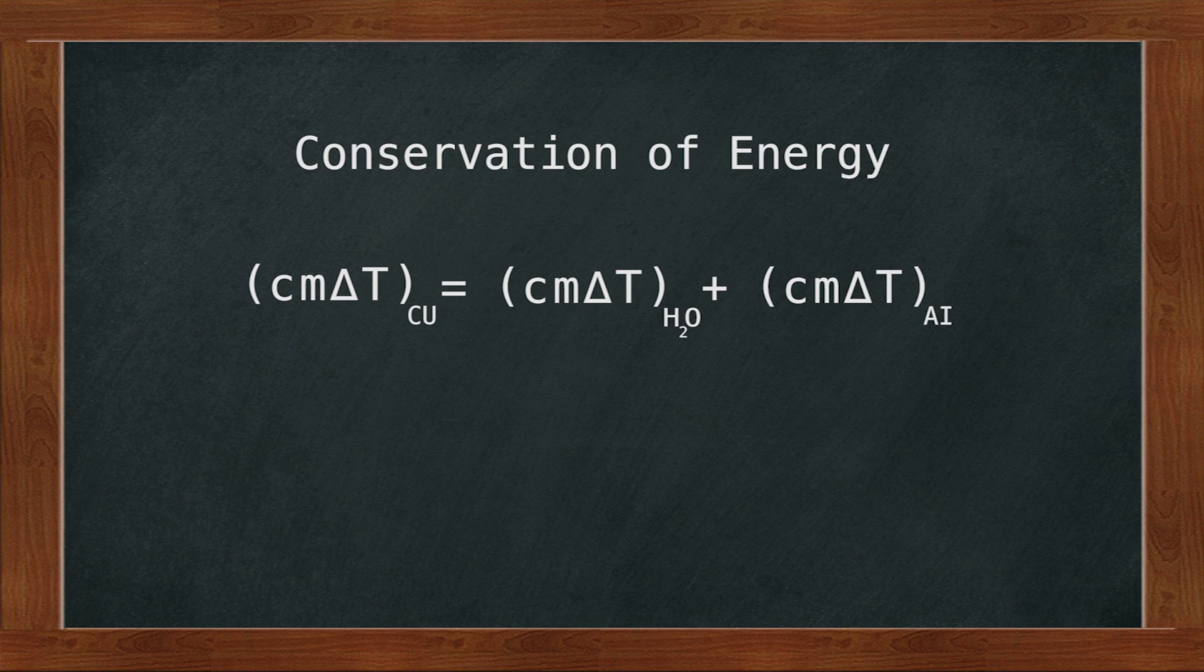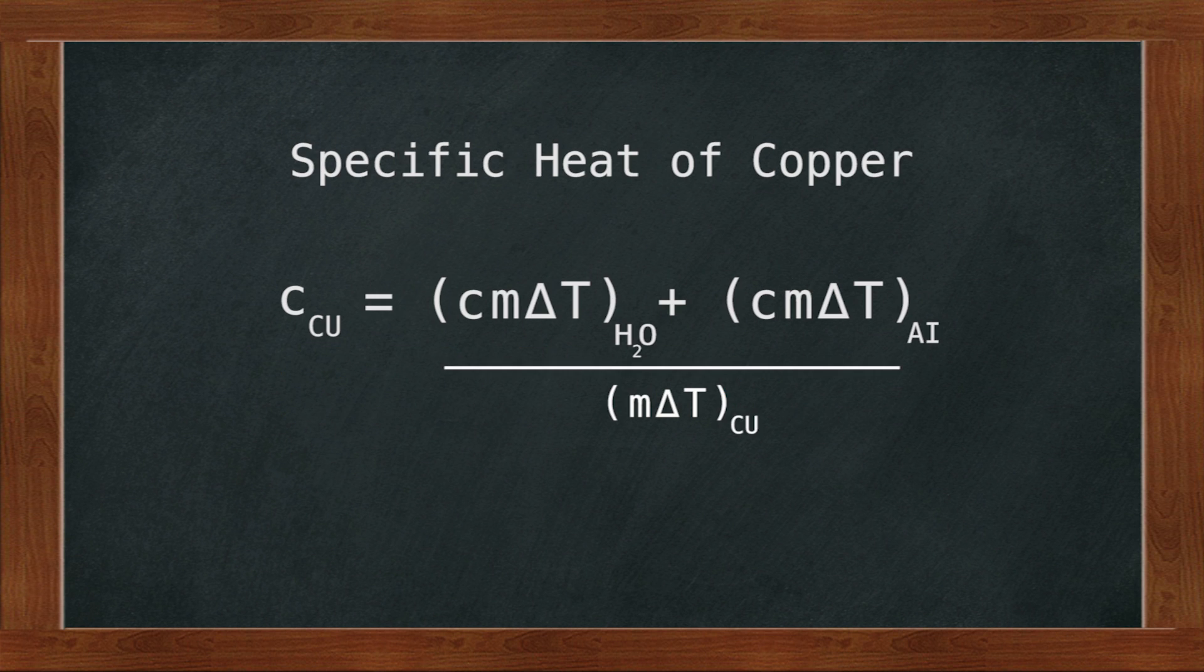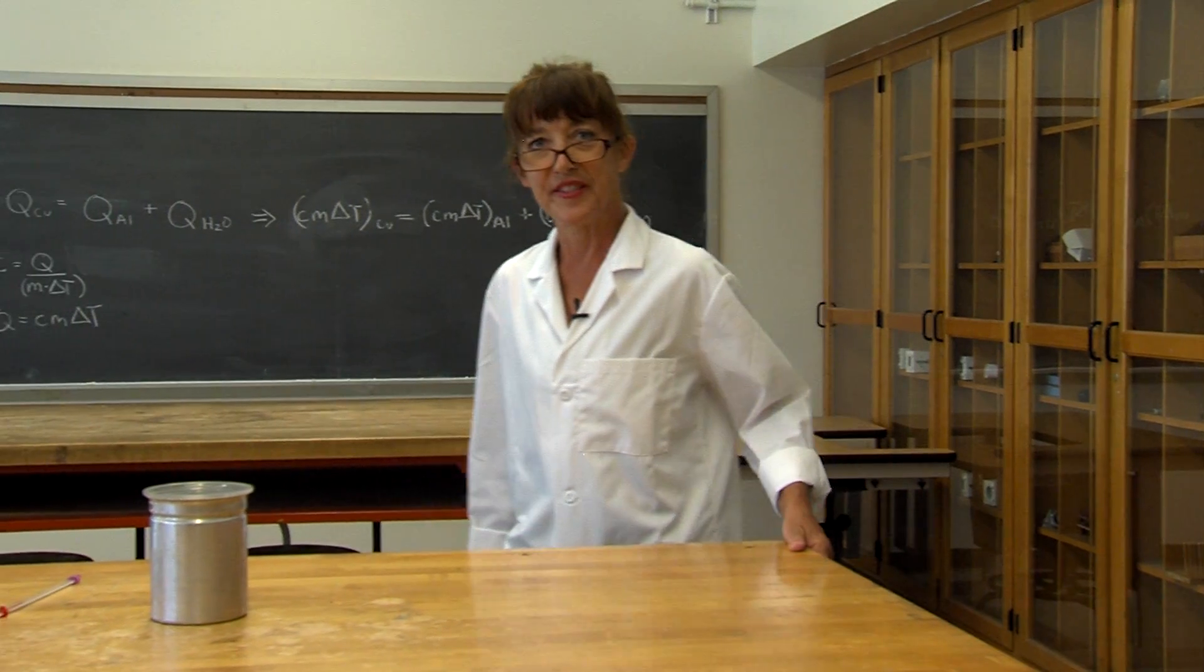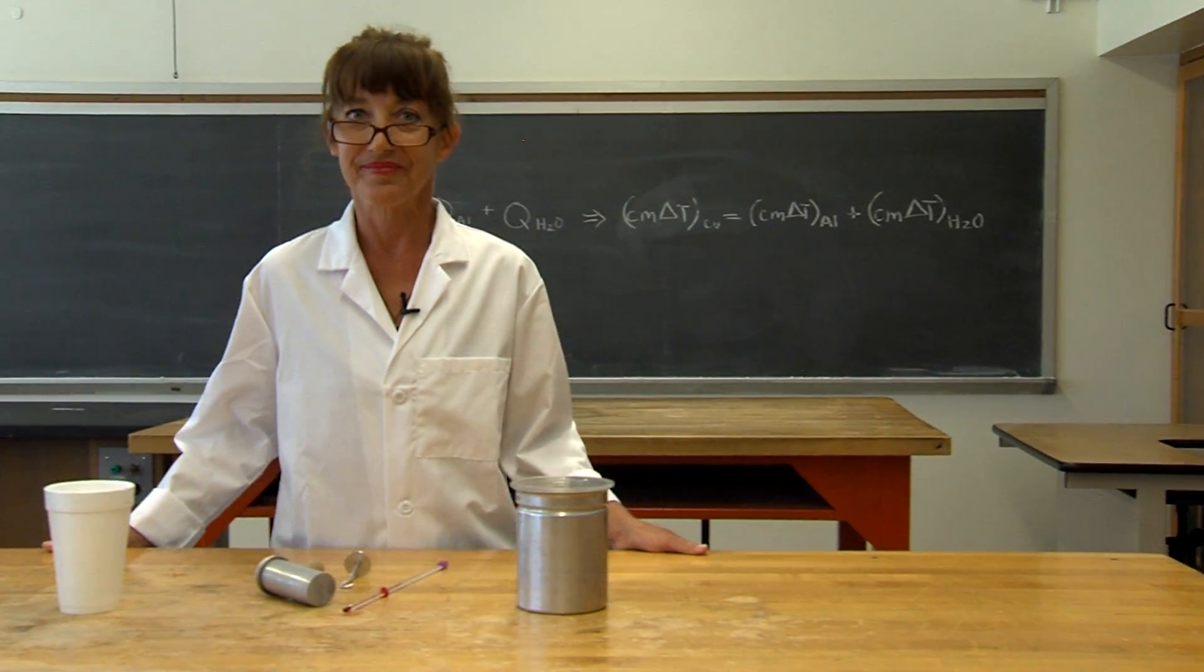Doing so, we have C M delta T of copper equals C M delta T of water plus C M delta T of aluminum. Dividing both sides of the equation by M delta T of copper gives C of copper equals C M delta T of water plus C M delta T of aluminum, that quantity divided by M delta T of copper. And now we've solved for the specific heat of copper. Enjoy!